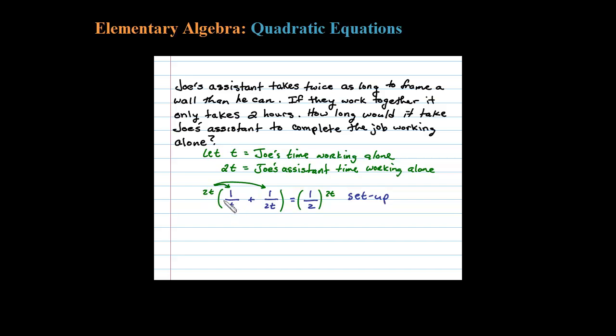Multiplying the first term by 2T, the T's would cancel and that would leave me with just a two, plus 2T times that second term, the entire 2T would cancel, so just plus one equals. Now on the right side the two cancels and that leaves me one times T, or just T. So this tells me three equals T.